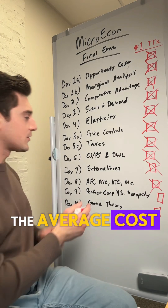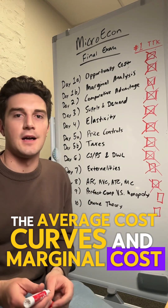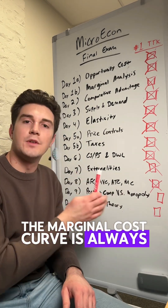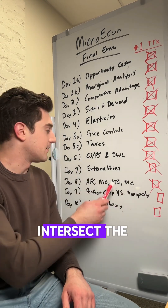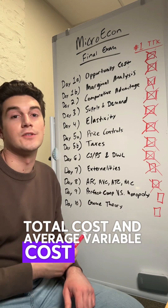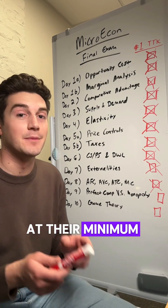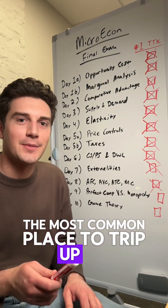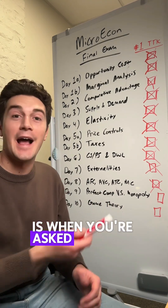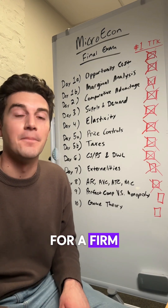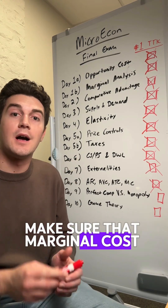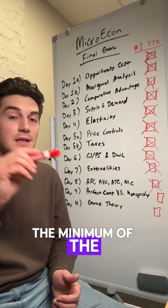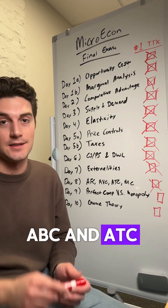Average cost curves and marginal cost. The marginal cost curve is always going to intersect the average total cost and average variable cost curves at their minimum points. The most common place to trip up is when you're asked to draw the curves for a firm — make sure that marginal cost curve intersects the minimum of the AVC and ATC curves.